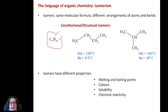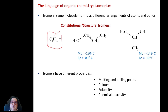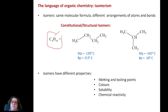Structure determines when and how it's going to melt, what colour it might have, what solubility it can have in one solvent or another. All of that is related to the structure of the compound. Just sharing the fact that they have 4 carbons and 10 hydrogens doesn't make those compounds much more similar. Those are structural isomers.